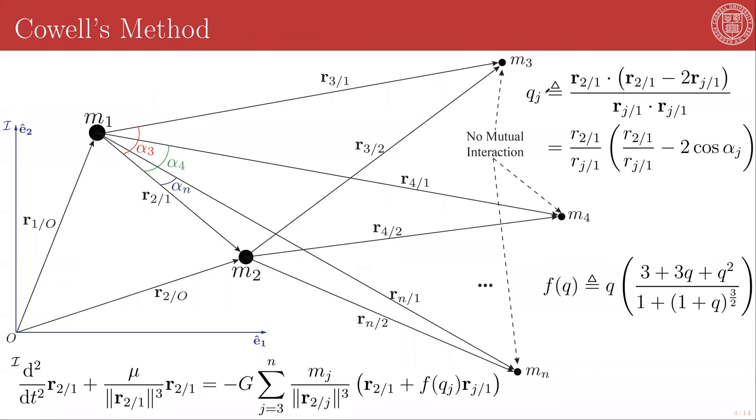In particular, we are going to define a generalized q, q sub j, that's given by r2rel1 dotted into r2rel1 minus twice rjrel1 scaled by rjrel1 dotted into itself. And this can be written in terms of pure scalar values as the magnitude of 2rel1 over the magnitude of jrel1 times the quantity scalar r2rel1 over rjrel1 minus 2 times cosine of that alpha j angle, where again, each alpha j is defined as the angle between rjrel1 and r2rel1. We similarly define an f of q function the same way that we had it in Enke's method, where f of q is equal to q times the quantity 3 plus 3q plus q squared over 1 plus quantity 1 plus q to the 3 halves power.